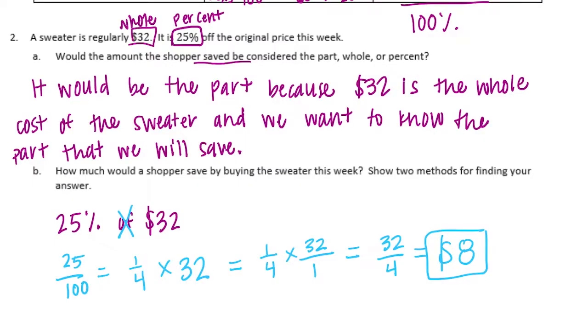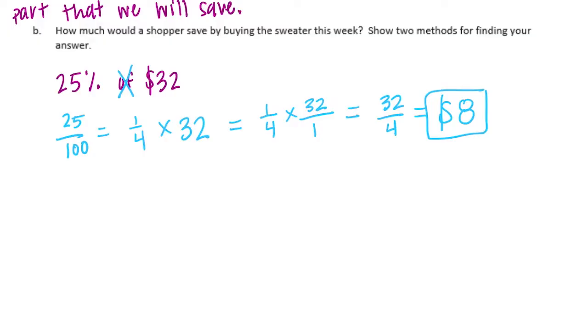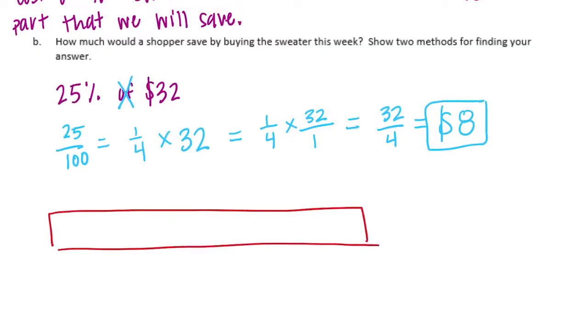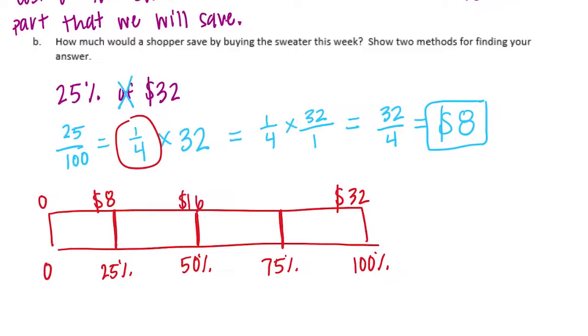And then another method. So we know that we have 1 fourth. So I'm going to split it into fourths. And then the percents, we'd have 0, 25%, 50%, 75%, and 100%. And then if I, the whole cost of the sweater is $32. If I split that into four equal parts, there's $0, $8, $16, and $24. So if I were to save 25%, I would get $8.